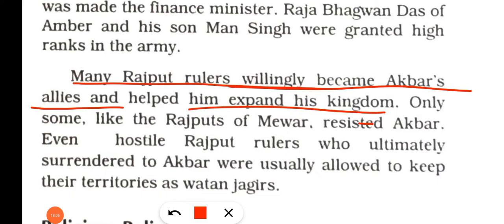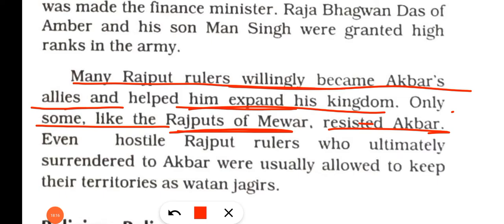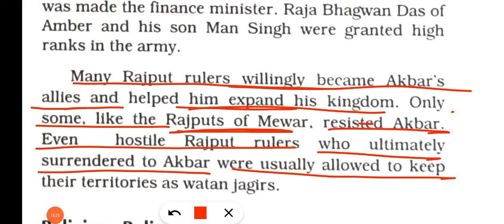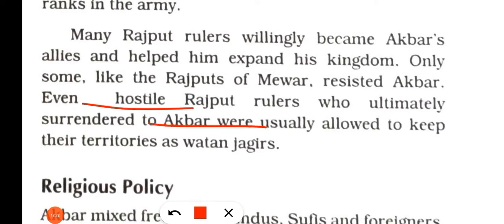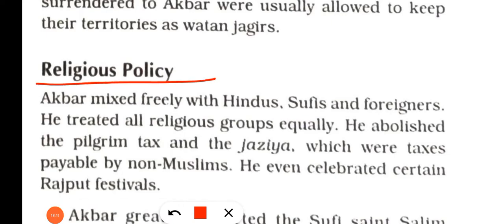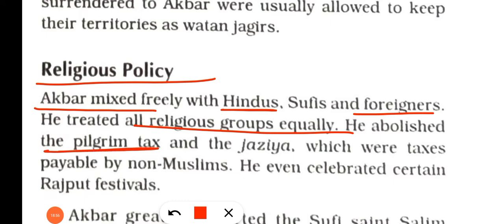Many Rajput rulers willingly became Akbar's allies and helped expand his kingdom. Only some, like the Rajputs of Mewar, resisted Akbar. Even hostile Rajput rulers who ultimately surrendered were usually allowed to keep their territories as Watan Jagirs. Regarding religious policy, Akbar was very tolerant of all religions. He mixed freely with Hindus, Sufis, and foreigners, treated all religious groups equally, and abolished the pilgrim tax and Jizya, which were taxes payable by non-Muslims. He also celebrated many Hindu festivals.